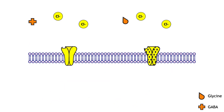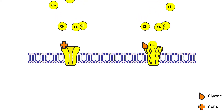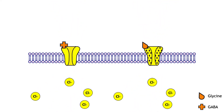GABA and glycine receptors are chloride channels. Since an increase in chloride permeability across the membrane is inhibitory, the binding of GABA or glycine to their respective ionotropic receptor will cause inhibition. Post-synaptic potentials are a result of ionotropic receptors opening. Excitatory ionotropic receptors increase sodium permeability across the membrane, whereas inhibitory ionotropic receptors increase chloride permeability. Ion flow through the ionotropic receptors follows the same principles as other ion channels covered so far.